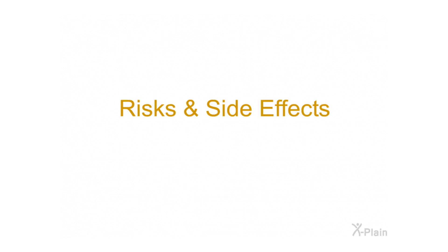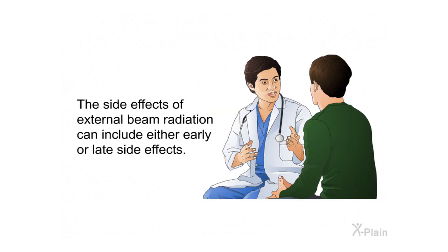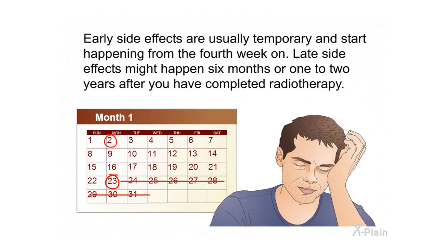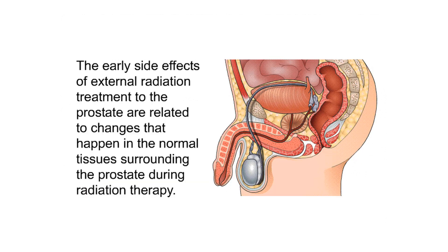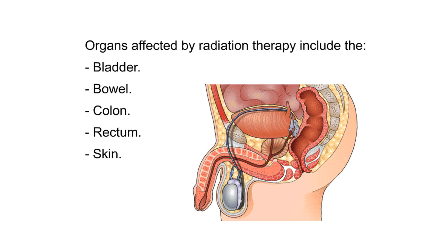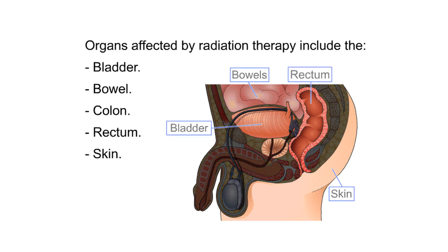Risks and side effects. The side effects of external beam radiation can include either early or late side effects. Early side effects are usually temporary and start happening from the fourth week on. Late side effects might happen six months or one to two years after you have completed radiotherapy. The early side effects are related to changes that happen in the normal tissues surrounding the prostate during radiation therapy. Organs affected include the bladder, bowel, colon, rectum, and skin.